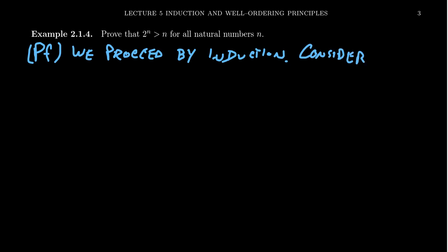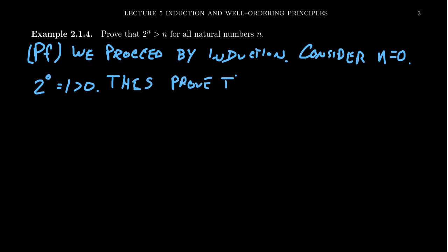First we consider the base case. What's the right natural number to start? We start with n=0 because the statement is true there. When n=0: 2^0 = 1, which is greater than 0. This proves the base case.